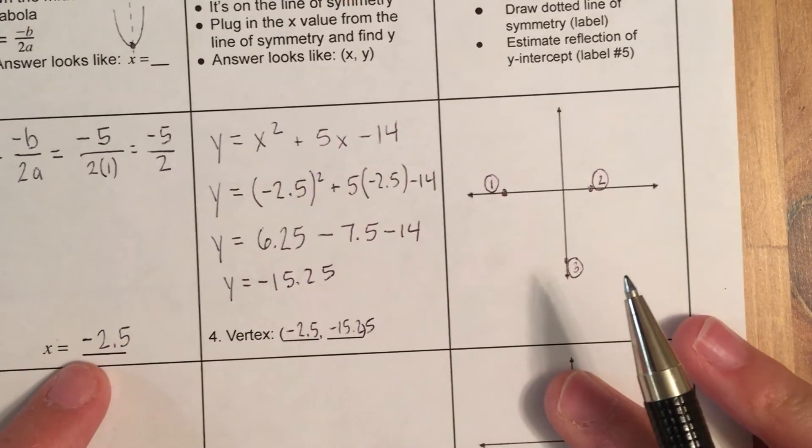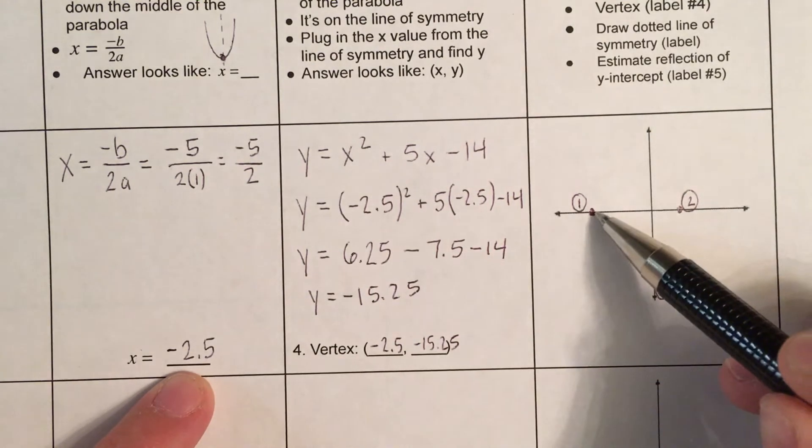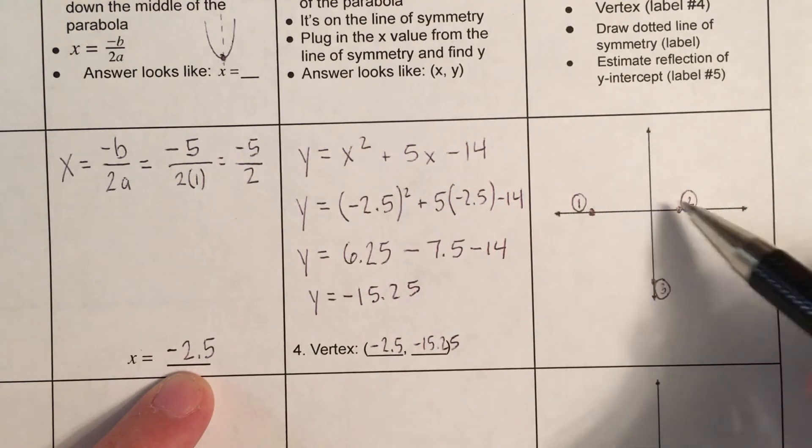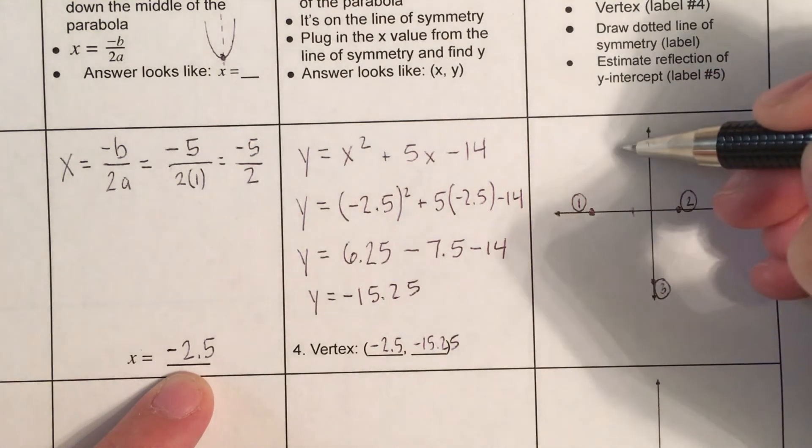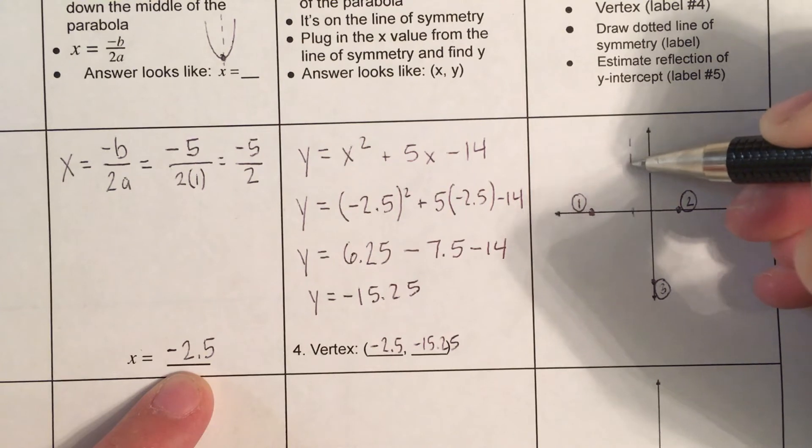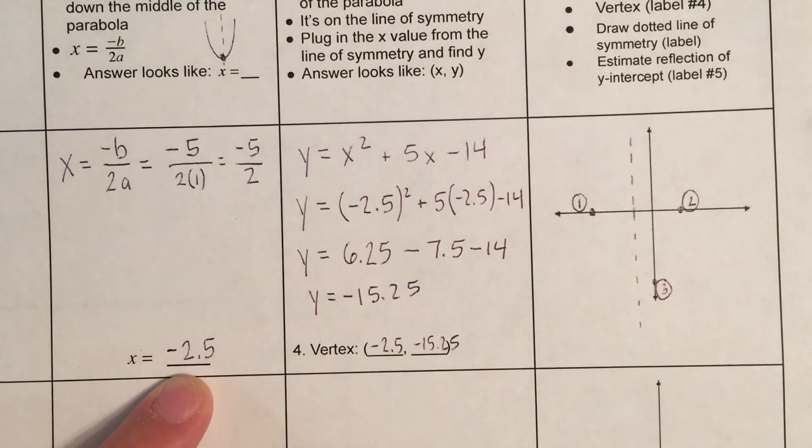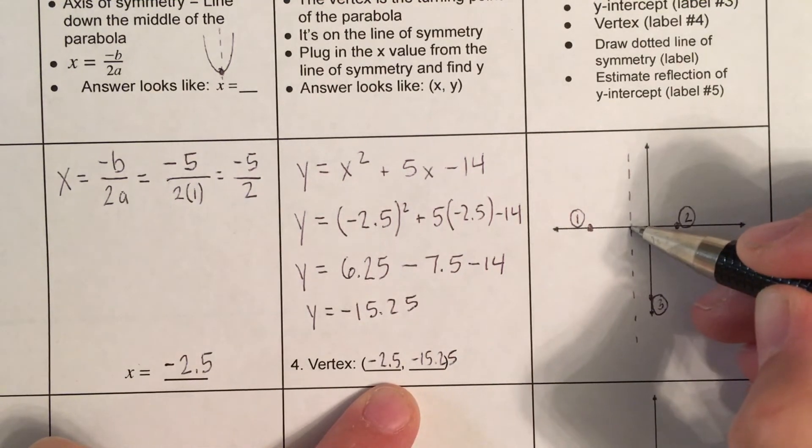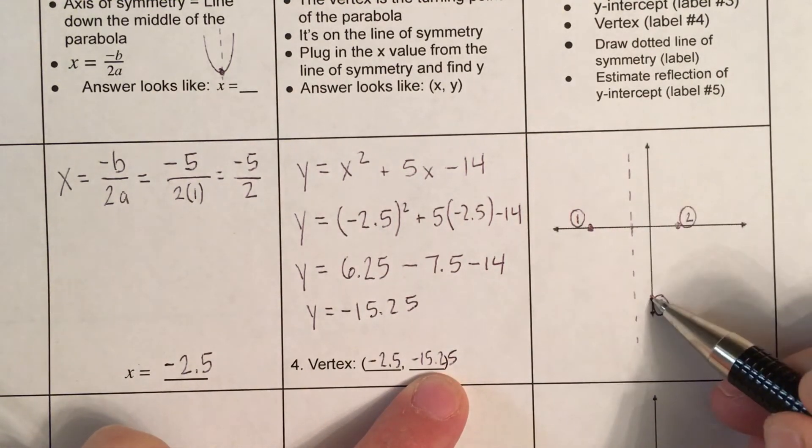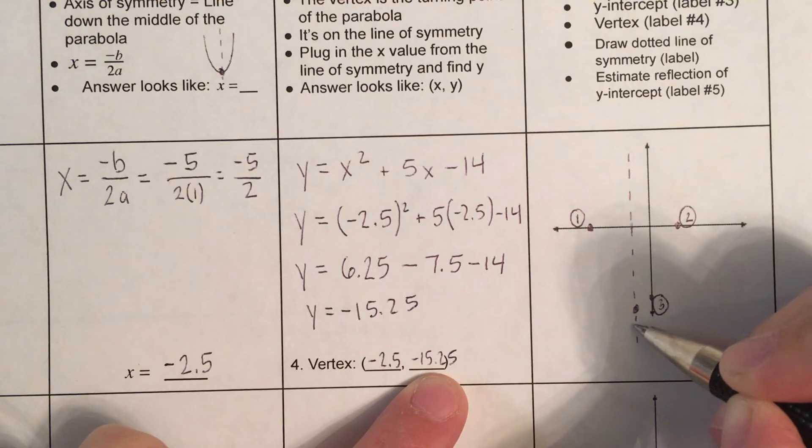Now, the axis of symmetry, we're going to sketch that. It's at x is negative 2.5. And what you'll notice is it's halfway between these two points. Because these two points are both on the parabola and it's going to be halfway. So, 2.5 is maybe like right about here. And you're going to just draw a dotted line. And then you're going to draw the vertex. So, the vertex, I'm going to label it number 4, is here. So, think about it. It's negative 2.5. So, it's on this line. And it's at negative 15.25. So, this was negative 14. So, negative 15 is a little bit lower. It'll be right about here. We're going to label that 4.